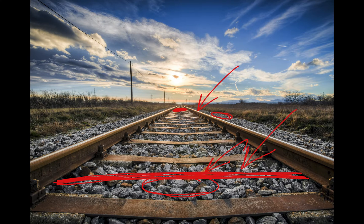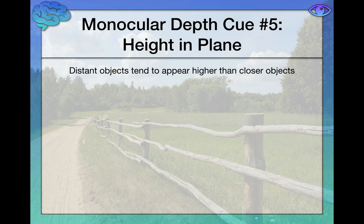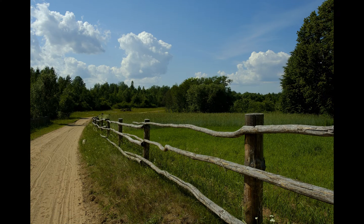Next, we have height in plane — another simple cue you've encountered on a daily basis but probably never thought about. Distant objects tend to appear higher on our visual fields than closer objects. Notice this pole and this tree: the tree is higher on our visual plane than the pole. Therefore, we know the tree is further away from us.